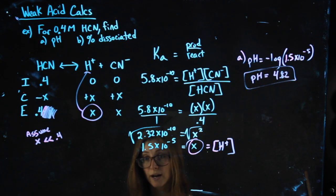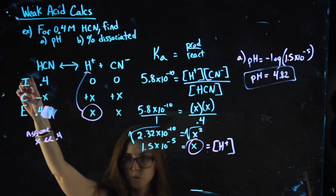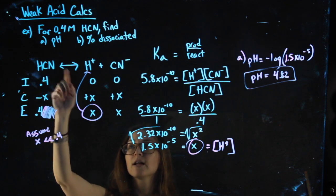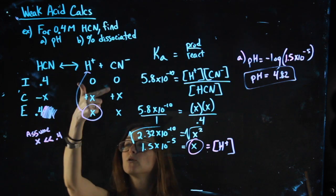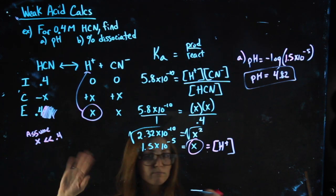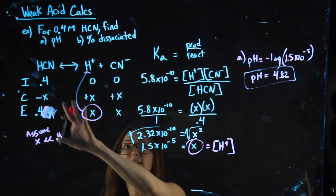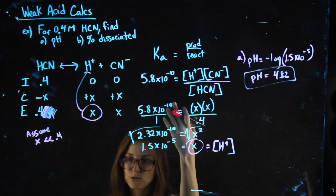How this is different from a strong acid? If this were strong, which it's not, you would have said, oh, it's a single arrow, so I can use a mole ratio, and it's one to one, so my H+ is 0.4, negative log. You would skip all of this. Can't do that with weak acids.